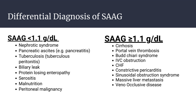If SAG is equal to or more than 1.1 gram per deciliter, and also peritoneal malignancy for low SAG, then the high SAG causes can be: cirrhosis, portal vein thrombosis, Budd-Chiari syndrome, IVC obstruction, congestive heart failure, constrictive pericarditis, sinusoidal obstruction syndrome, massive liver metastasis, or veno-occlusive disease.